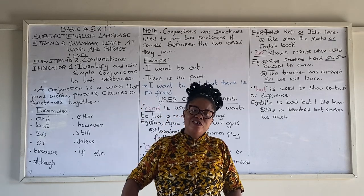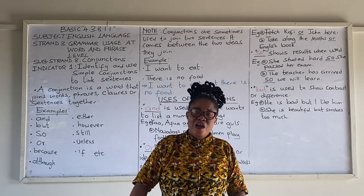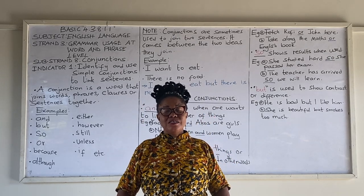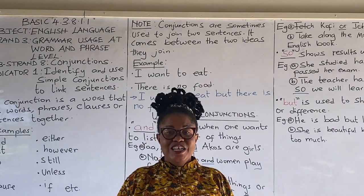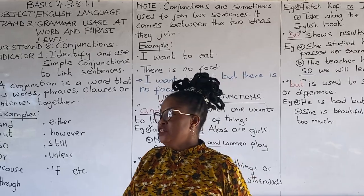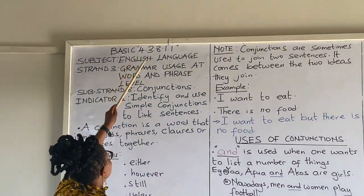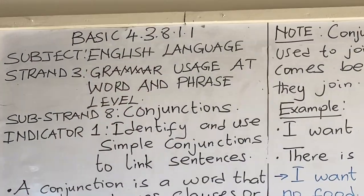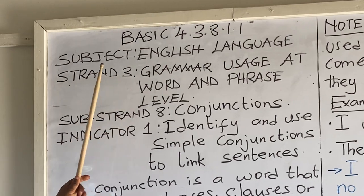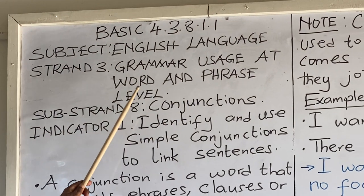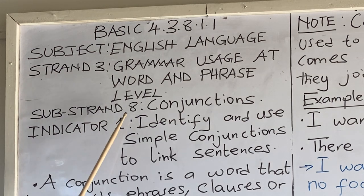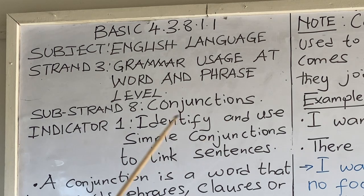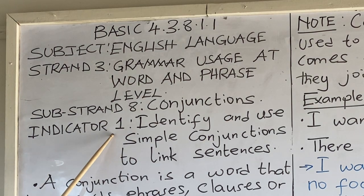Hello, welcome to Let Us Learn's Basic 4 online tutorials. Today's tutorial is on English language, taken from Strand 3, grammar usage at word and phrase level, subsection 8: conjunctions. Indicator 1: